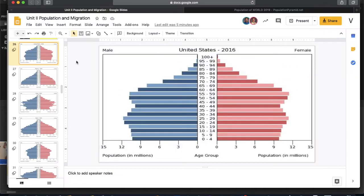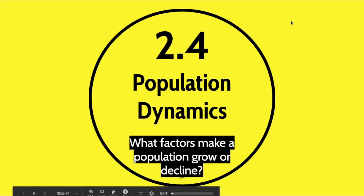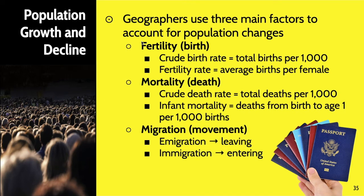Moving past population pyramids, we get into population dynamics — the changes in a population. Is it growing? Is it declining? What are the factors? It comes down to two main categories. One is natural change: fertility and mortality. Fertility is births, mortality is deaths. We measure fertility in two ways: crude birth rate, which is total births per 1,000 people, and fertility rate, which is the average number of births a childbearing woman will have in her lifetime.